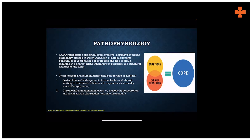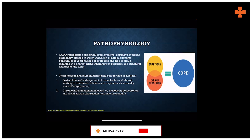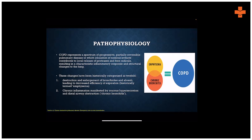A lot of them will actually overlap maybe with asthma, and a lot of them will actually overlap with cardiac problems as well. Because it represents a huge spectrum of progressive, partially reversible or irreversible pulmonary diseases, where inhalation of noxious irritants contributes to local release of proteases and free radicals, which then lead to inflammatory response and permanent structural changes to the lung.